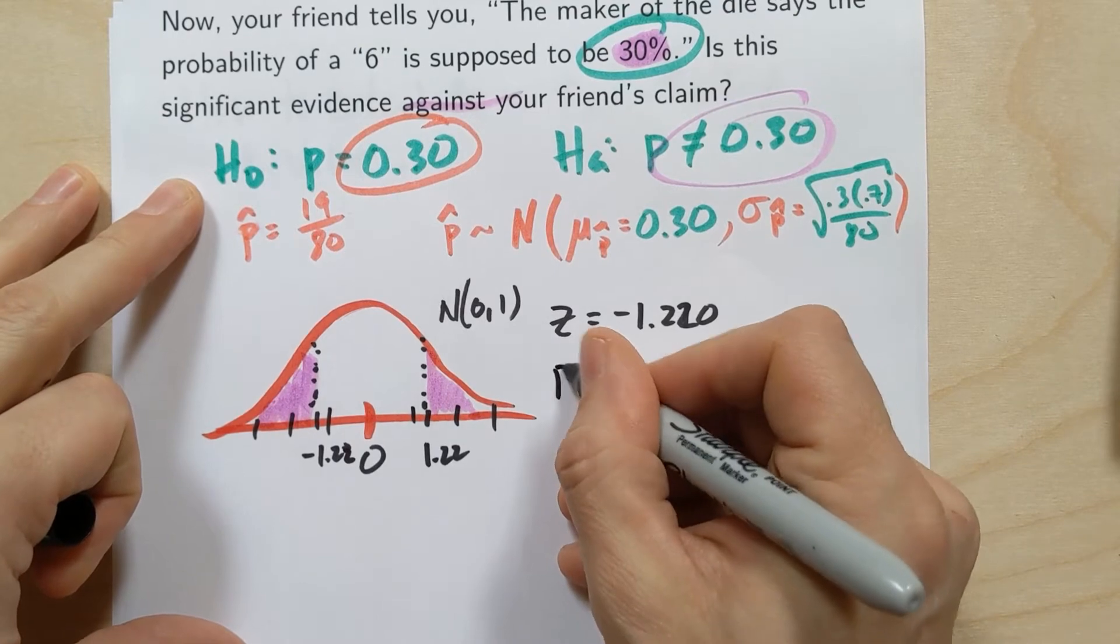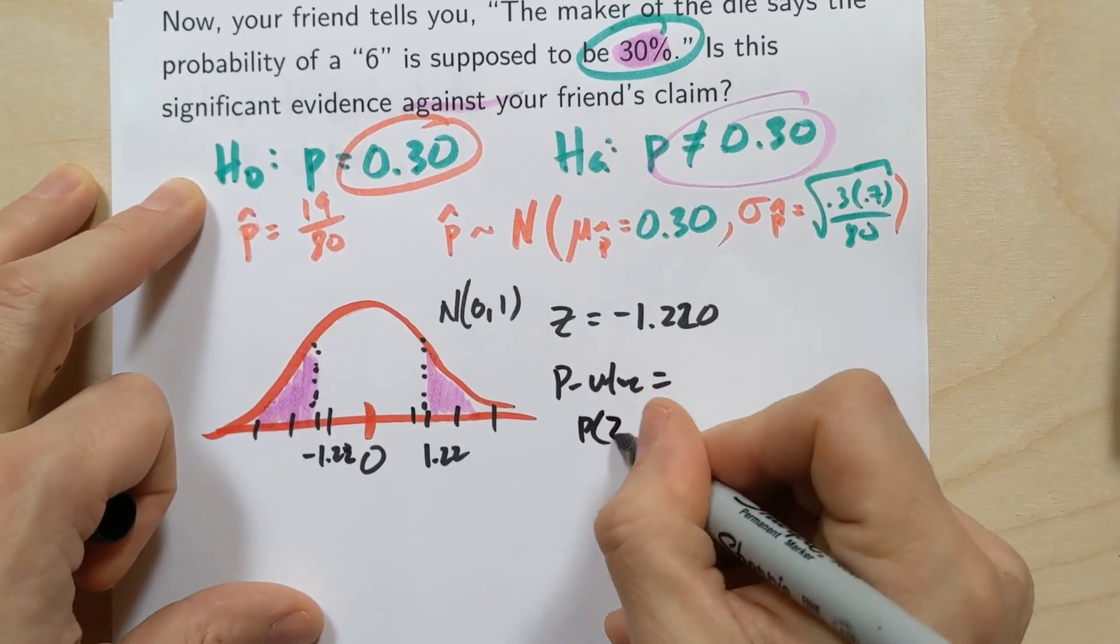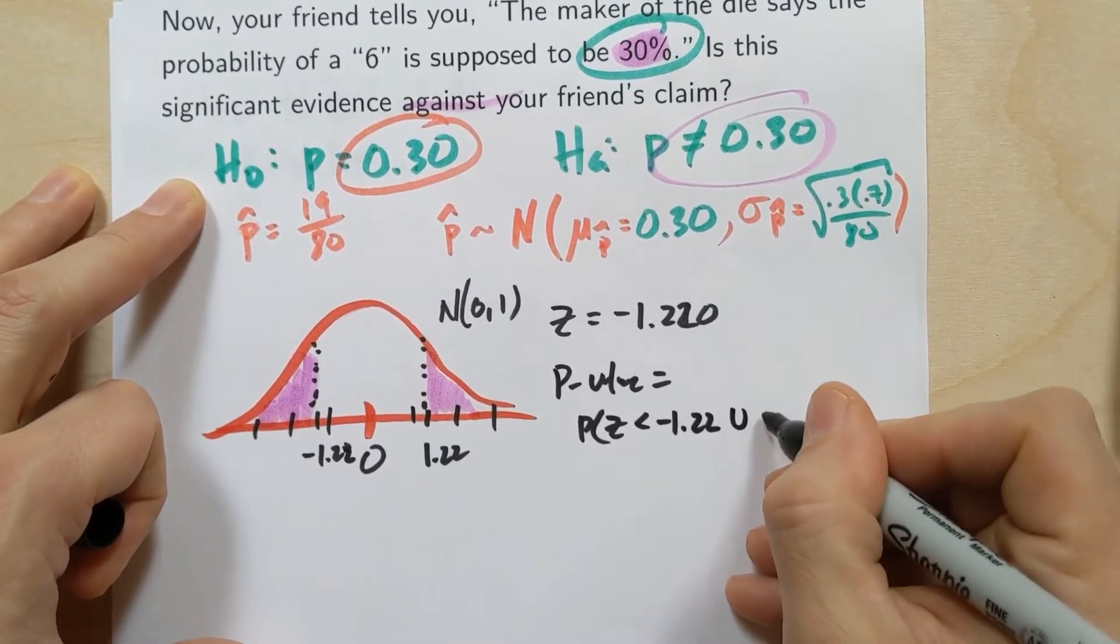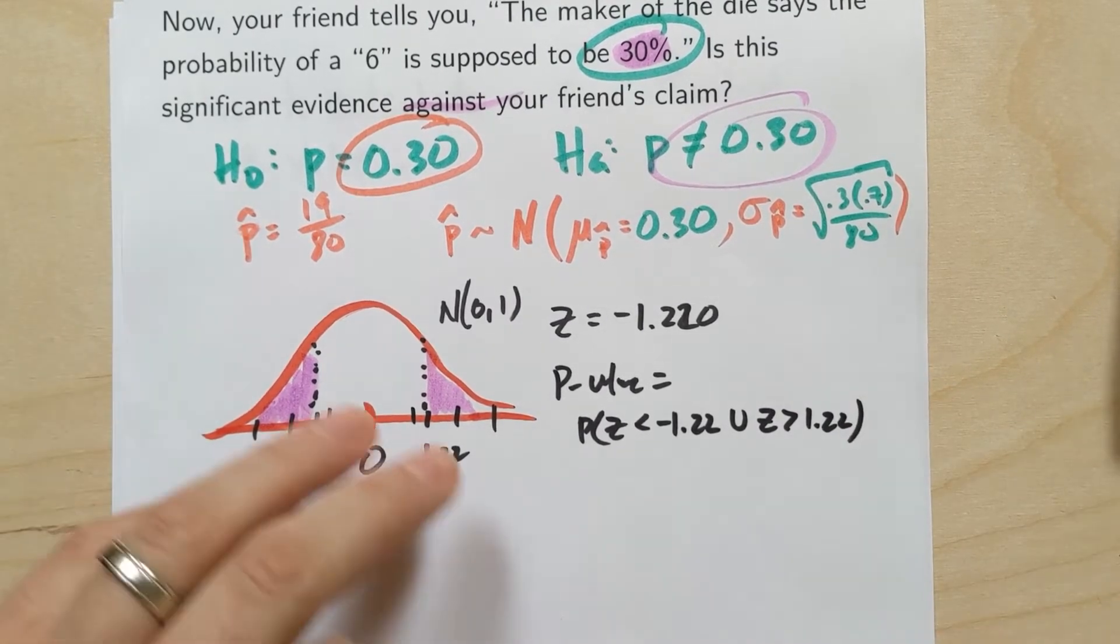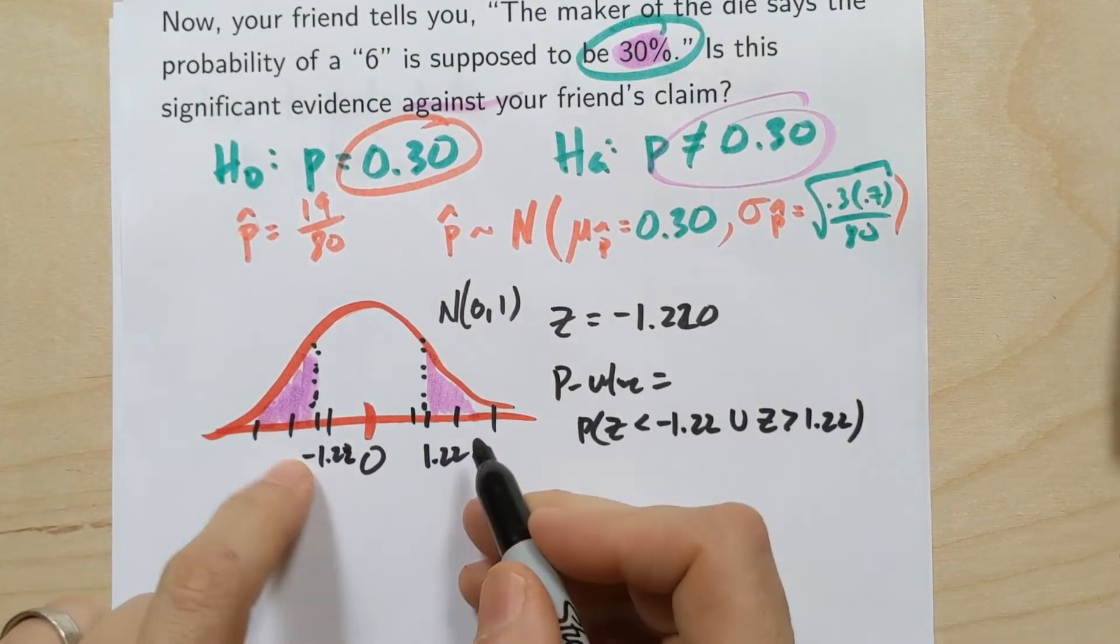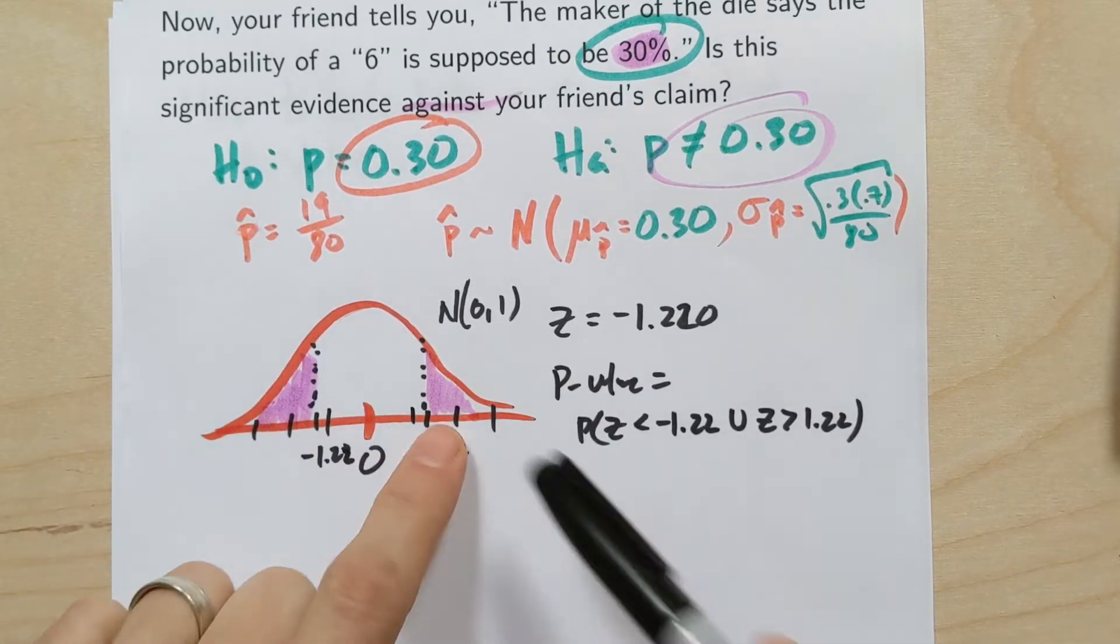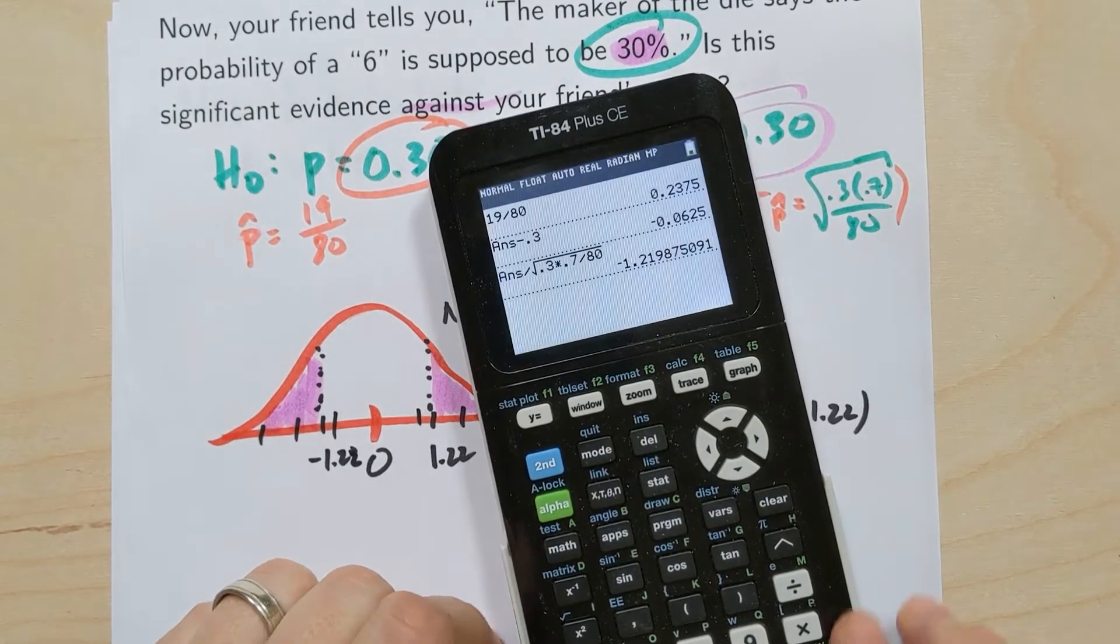And so I'm going to shade everything to the left of negative 1.22 and everything to the right of positive 1.22. In other words, the P value will be the probability that Z is less than negative 1.22 union with the Z is greater than 1.22. Now, how do we deal with this?